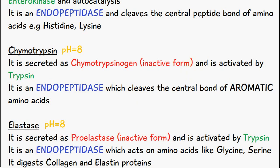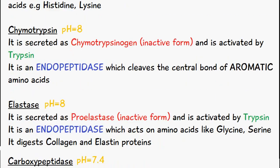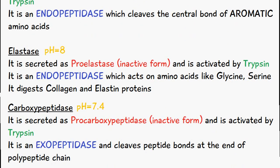Following this, we have an enzyme known as elastase, with an optimum pH of 8. It is secreted as proelastase, which is the inactive form, and it's activated again by trypsin. It is an endopeptidase which acts on amino acids like glycine and serine, and it also digests collagen and elastin proteins.